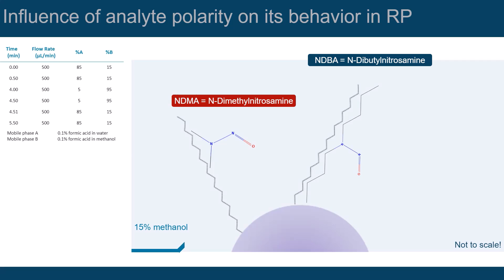Now the mobile phase gradually becomes less polar as the methanol content is slowly increased. The interaction of the NDMA molecule with the stationary phase is disrupted, as it now has a greater affinity to the mobile phase. It finally is eluted from the column, while the more non-polar analyte NDBA still rather interacts with the stationary phase.